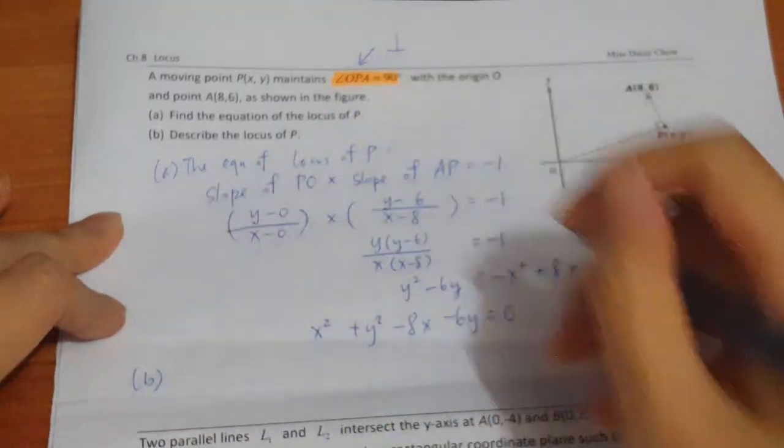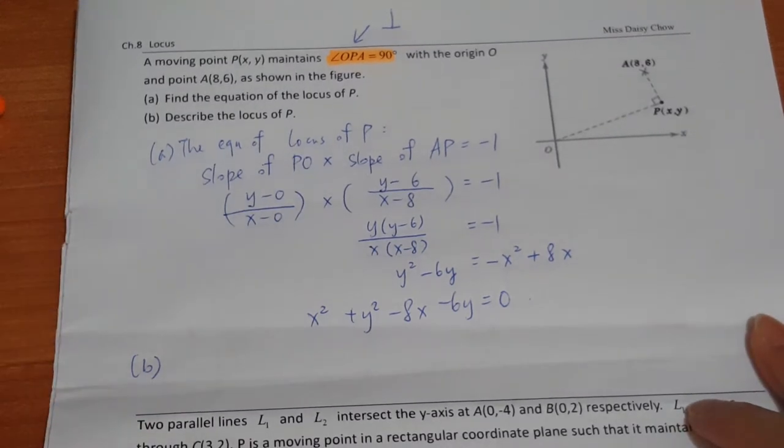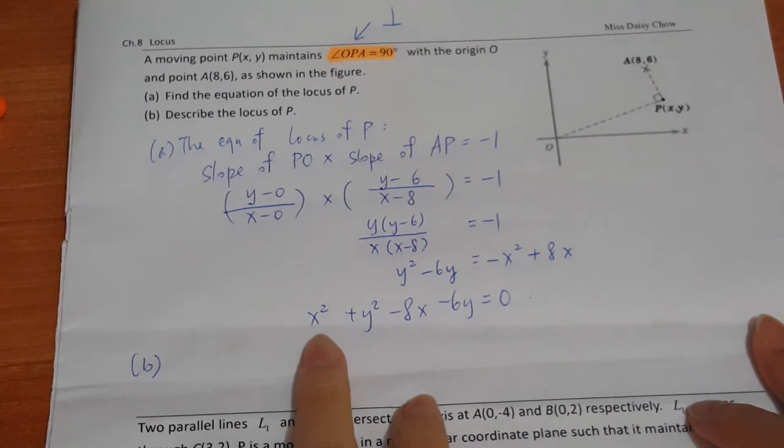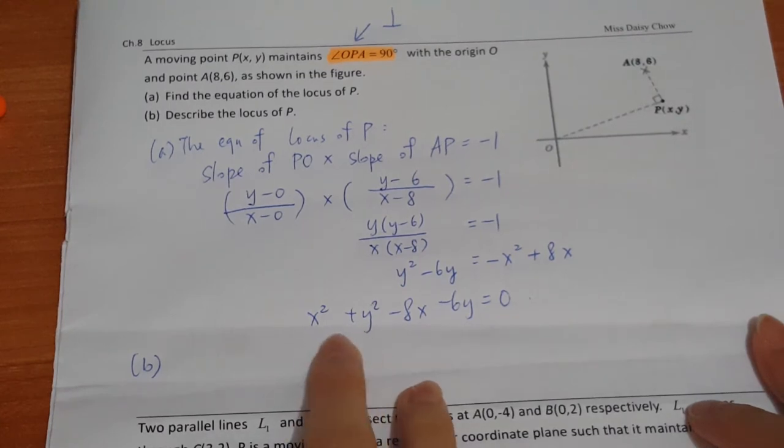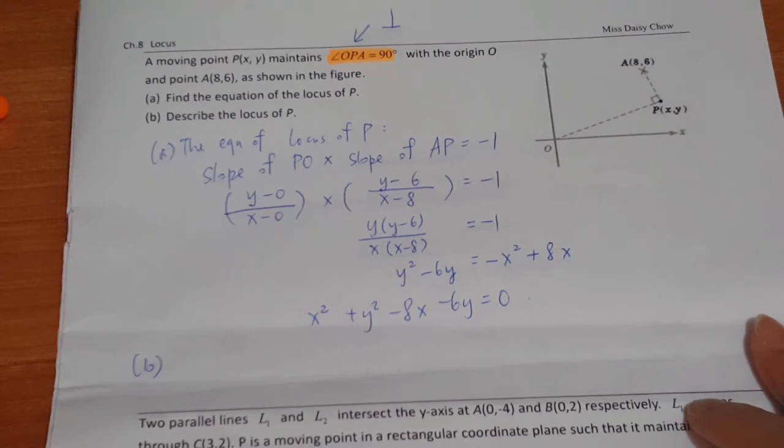And then for part B, after calculating the equation in part A, part B asks you to describe it. Since you see x squared plus y squared, you know it's a circle. If you remember, you need to state where the center is and what the radius is.